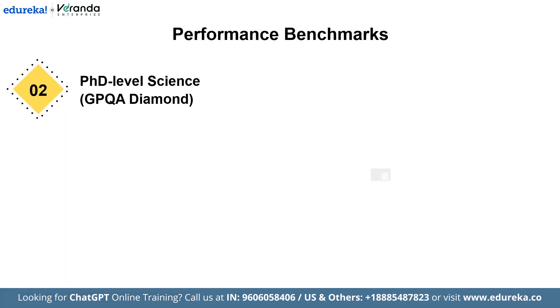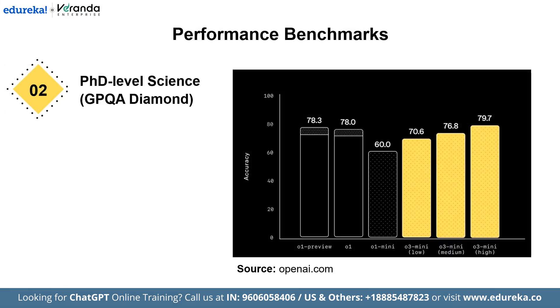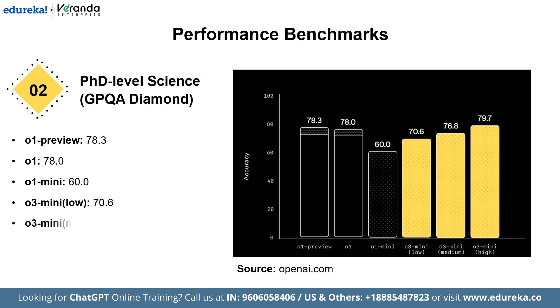Next is PhD-level science — GPQA Diamond. Here, the model achieves 79.7% accuracy with a high level of reasoning effort, showcasing its aptitude for tackling complex scientific queries.